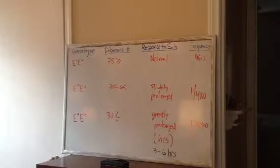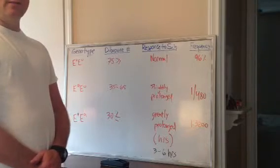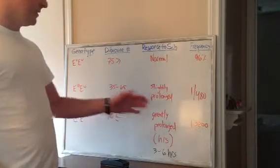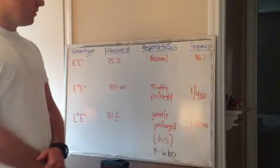And the last one and the most concerning would be that person that is homozygous for atypical pseudocholinesterase, and their dibucane number would be less than 30. And so the block will be greatly prolonged in this case from 3 to 6 hours up to 12, and your odds of having that are pretty low, 1 in 3200.